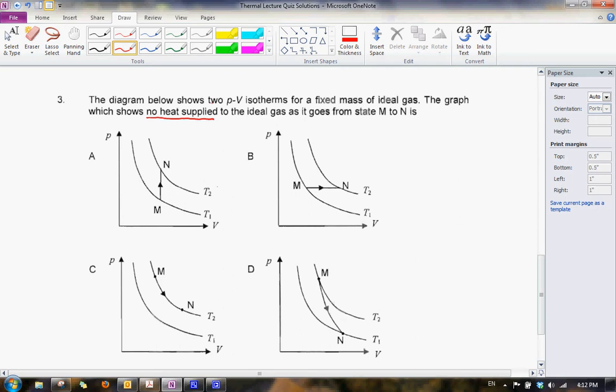Now we can't actually read off Q directly from the graph, so what we can get is things like work done, and since it's ideal gas, also internal energy, but here we are just determining the process.